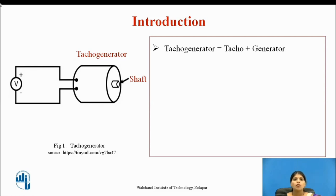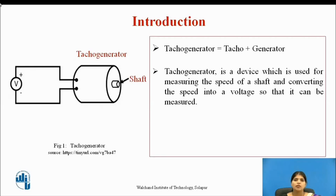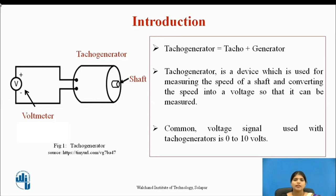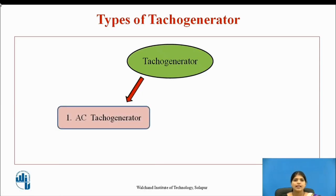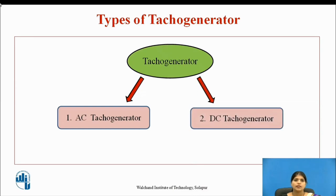Voltage is measured through a voltmeter. A common voltage signal used with tachogenerators is 0 to 10 volts. There are two types of tachogenerator: first, AC tachogenerator, and second, DC tachogenerator.